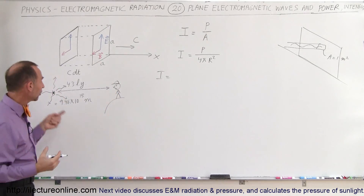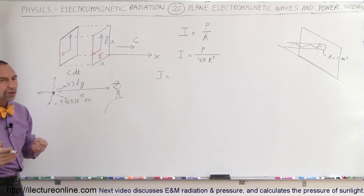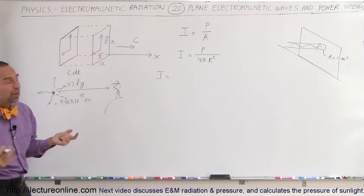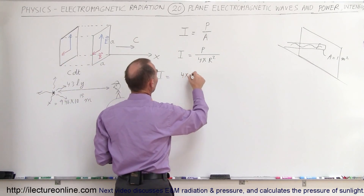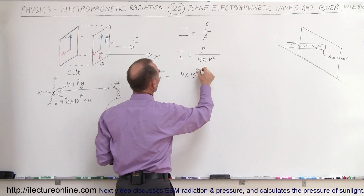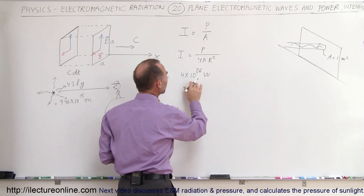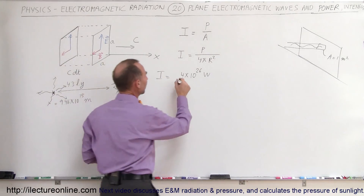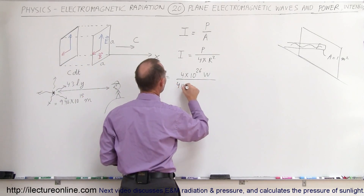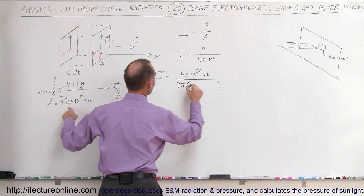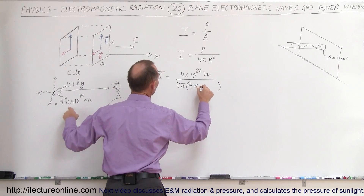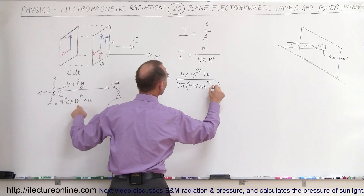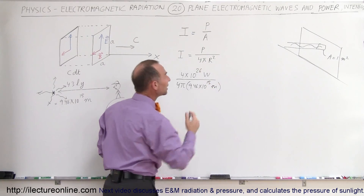What would be the power emanated from a star like Alpha Centauri? It's very similar to our star, the sun, so let's estimate it to be about 4 times 10 to the 26th watts — that many joules per second emanated from the star. We divide that by 4π times the radius squared, which is 9.46 times 10 to the 15th meters.